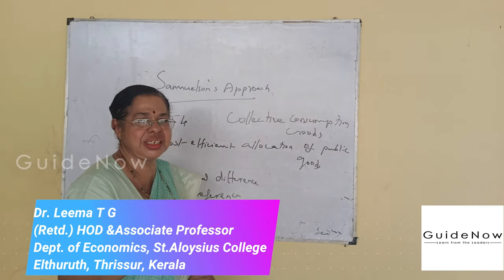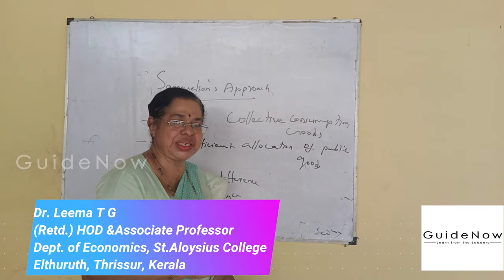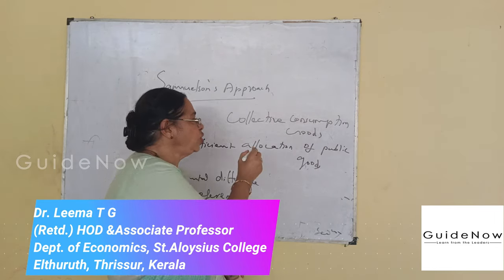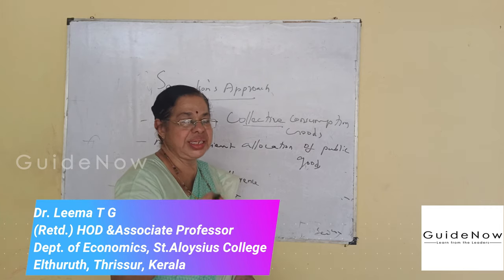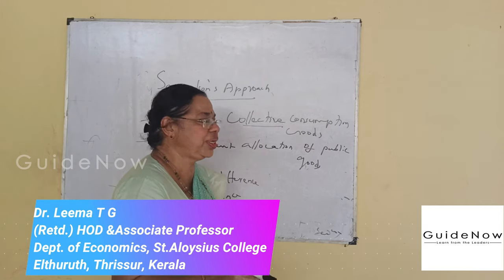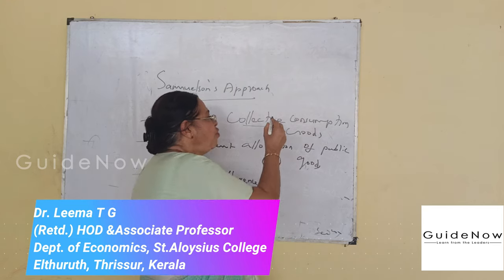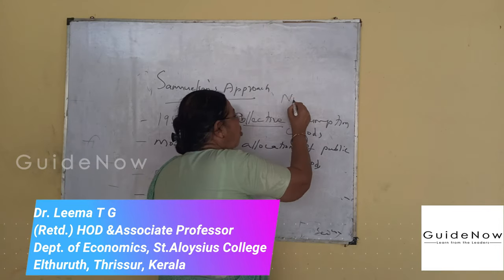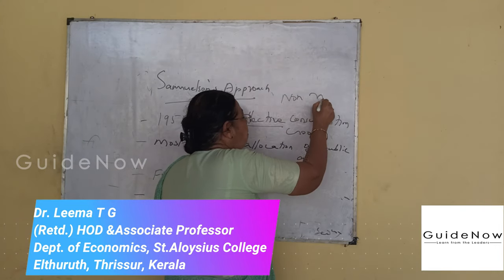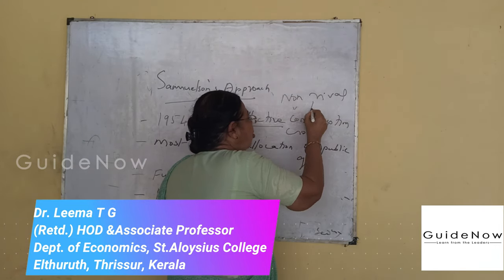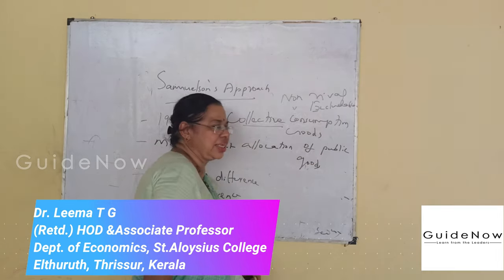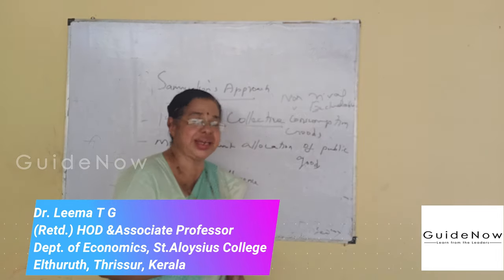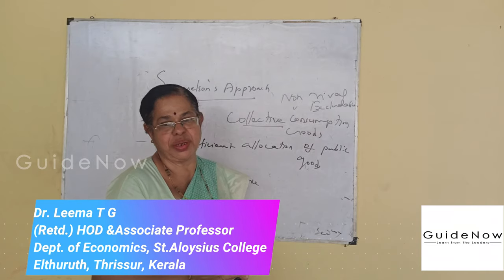Collective consumption goods represent those goods which are jointly consumed. There are two important characteristics of public goods: one is non-rival and second is non-excludable.